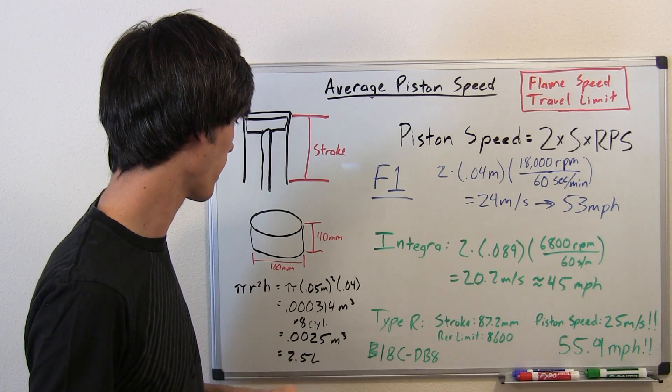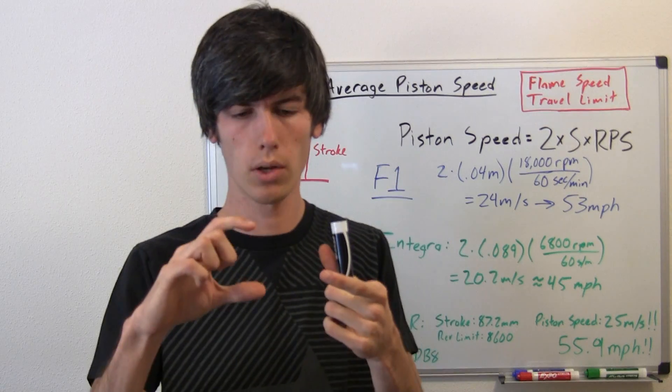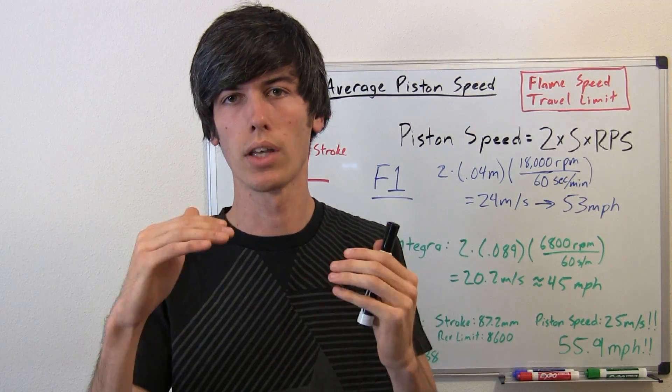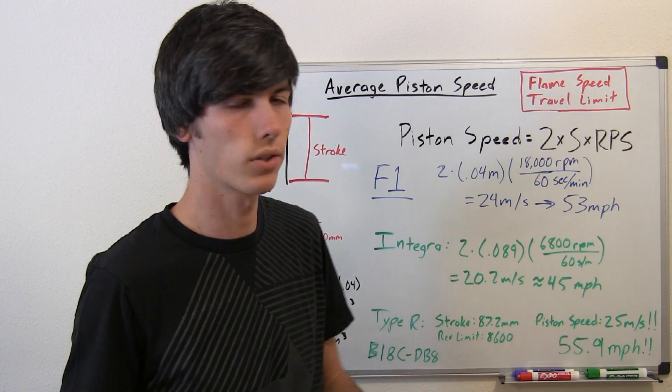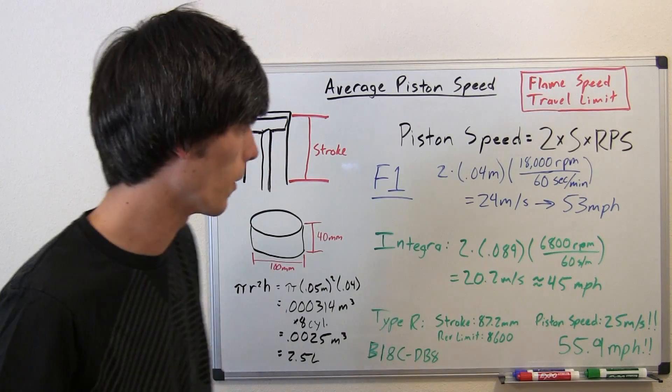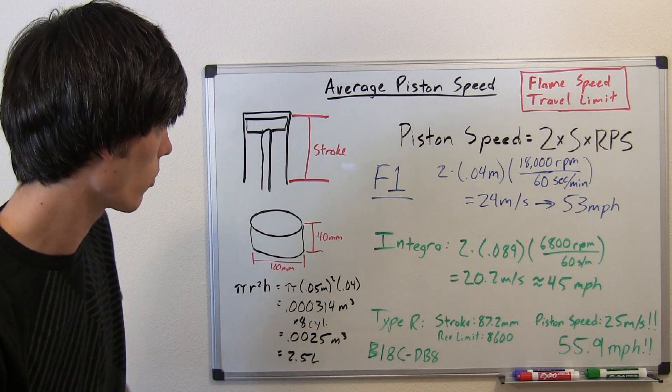The reason for doing that was because you want to have a large bore and a small stroke so that you can keep your piston speed down because of flame propagation, the speed at which combustion can occur. I'm going to explain calculating piston speed and how that works.